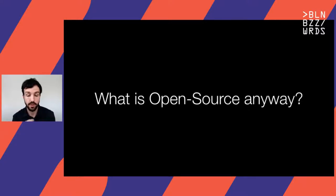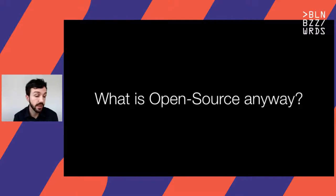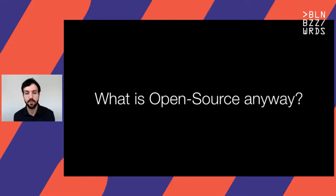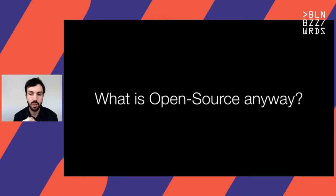Software was often bundled with hardware and supported by a one-time payment. That changed later as software became increasingly more complex in the 1960s — operating systems and programming languages proliferated, and people started charging money for software. In 1974, software became copyrightable in the United States, though many companies had already stopped distributing source code to increase revenue. In 1983, Richard Stallman created the GNU Project because he was frustrated with non-portable proprietary systems, and he founded the Free Software Foundation in 1985.